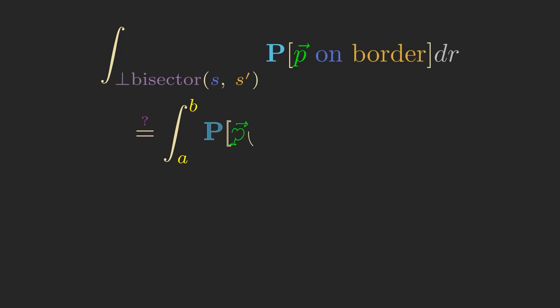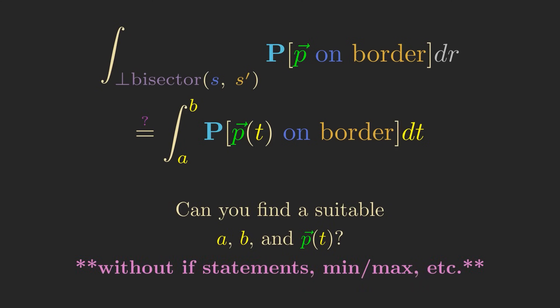it's not even so clear how to parameterize the points on the perpendicular bisector between two sites with bounds that don't use any conditionals.